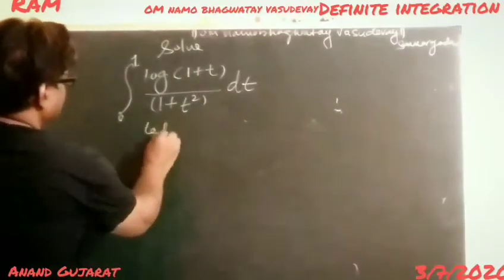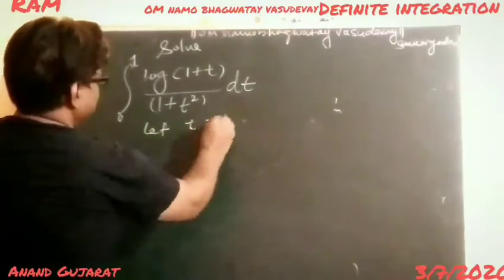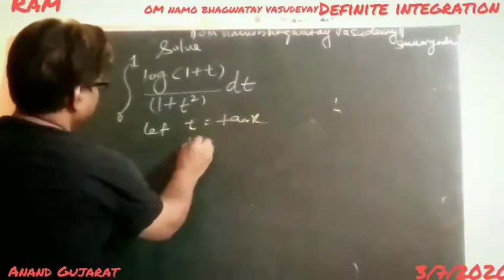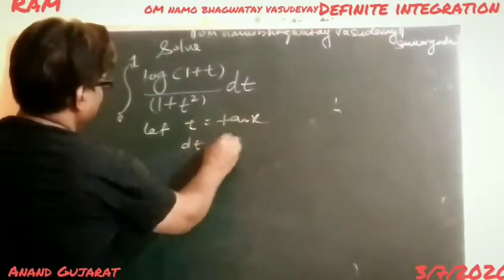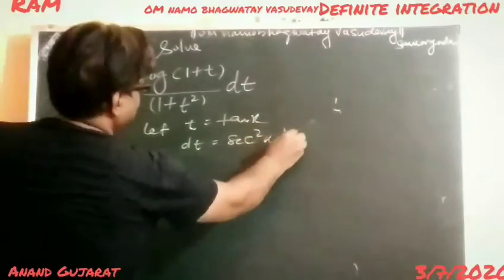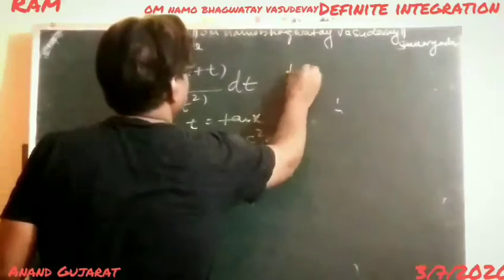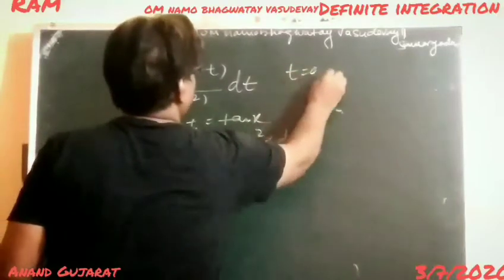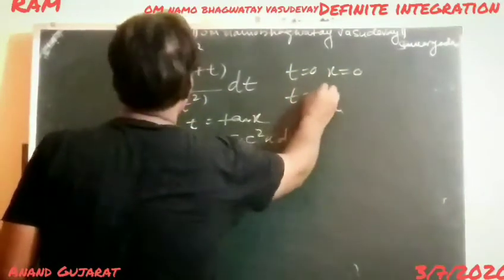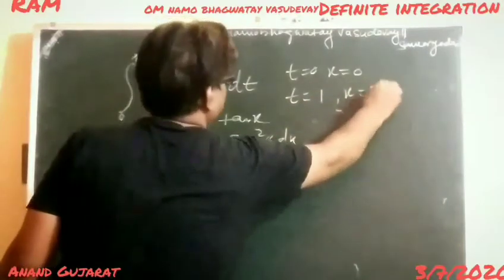Let t = tan(x). Therefore dt = sec²(x) dx. When t = 0, then x = 0. When t = 1, then x = π/4.